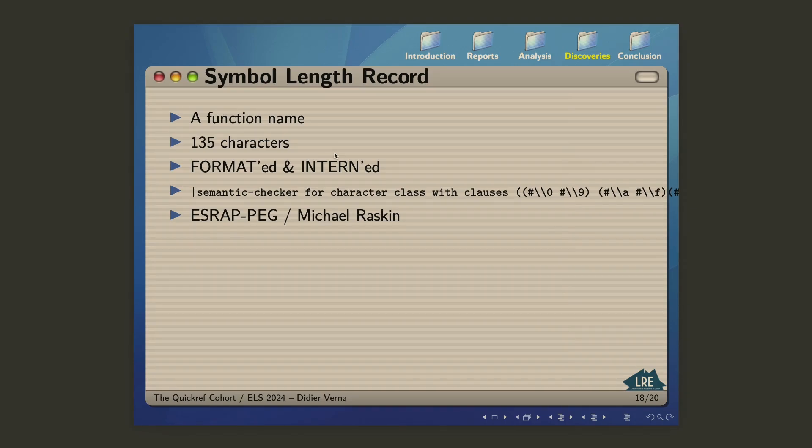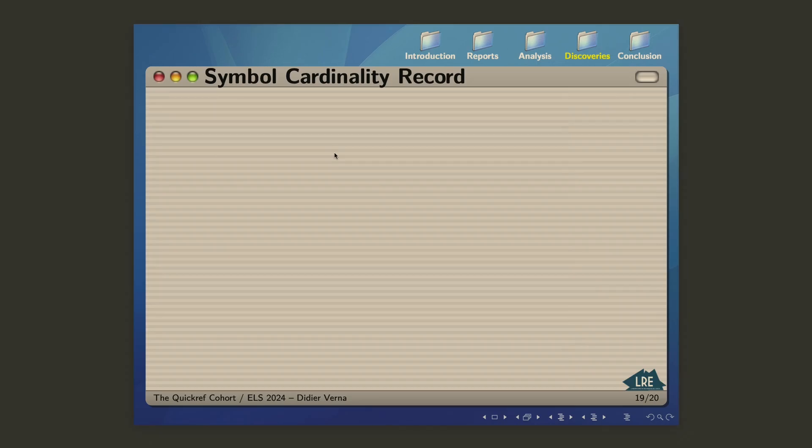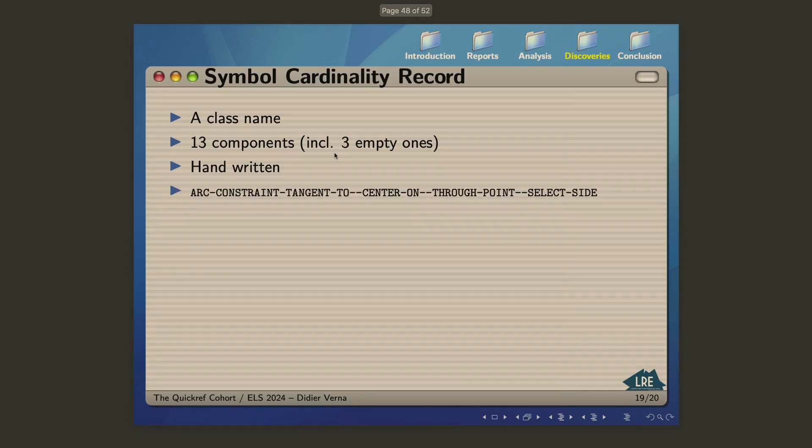And I will stop there, but I could continue for two hours. I can continue at lunch break if you want. There is also a symbol cardinality length record. So what I call symbol cardinality is when you have a symbol named foo-bar-baz, you count the number of sub name in the symbol separated by dashes. This is the cardinality. So the record is for a class name. It is 13 components long, including three empty ones, which means that at three times you have two consecutive dashes in the name. Here it is. Sorry, it's handwritten, this one. Arc-constraint-tangent-two-dash-dash-center on-dash-dash-through point-dash-dash-select-side.